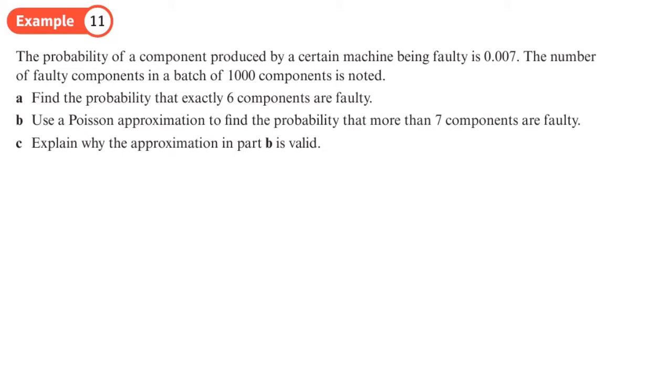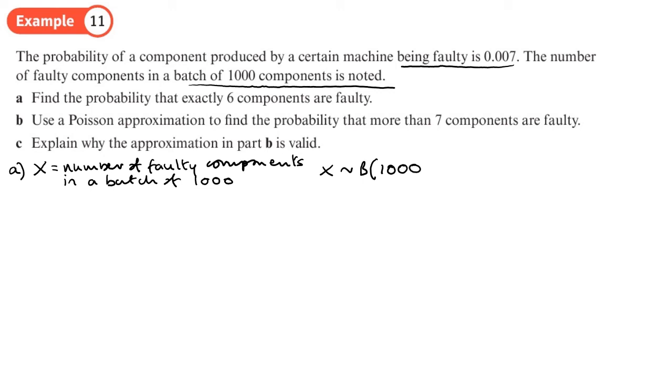The probability of a component produced by a certain machine being faulty is 0.007. The number of faulty components produced in a batch of a thousand components is noted. Part A: Find the probability that exactly 6 components are faulty. X is the number of faulty components in a batch of a thousand. This is going to be a binomial distribution because we've got a fixed sample size of a thousand and a fixed probability of success (being faulty), and we want to find the probability that there are exactly six of them.